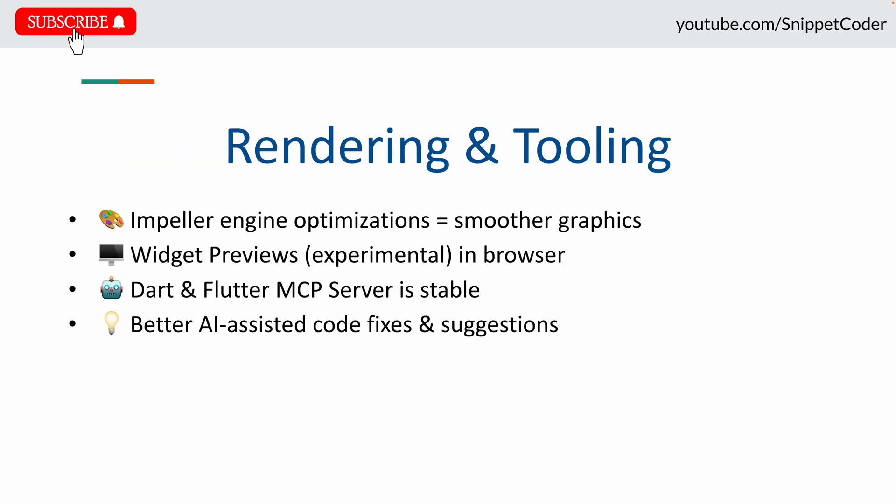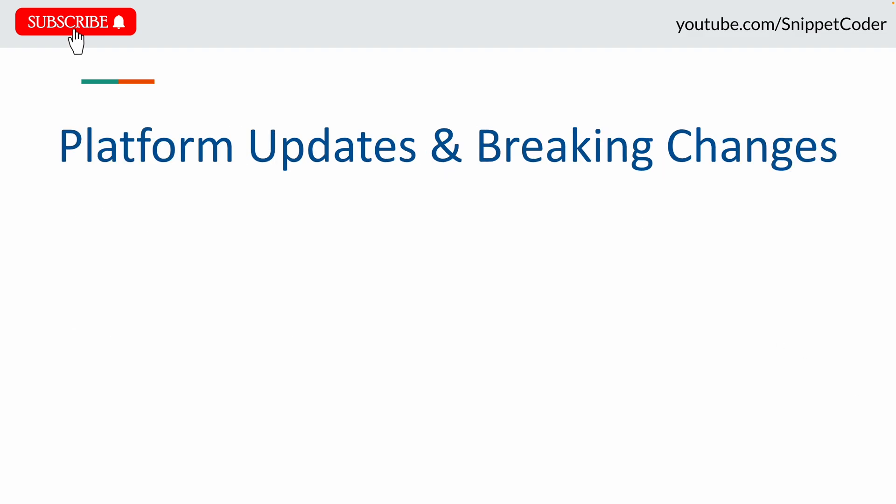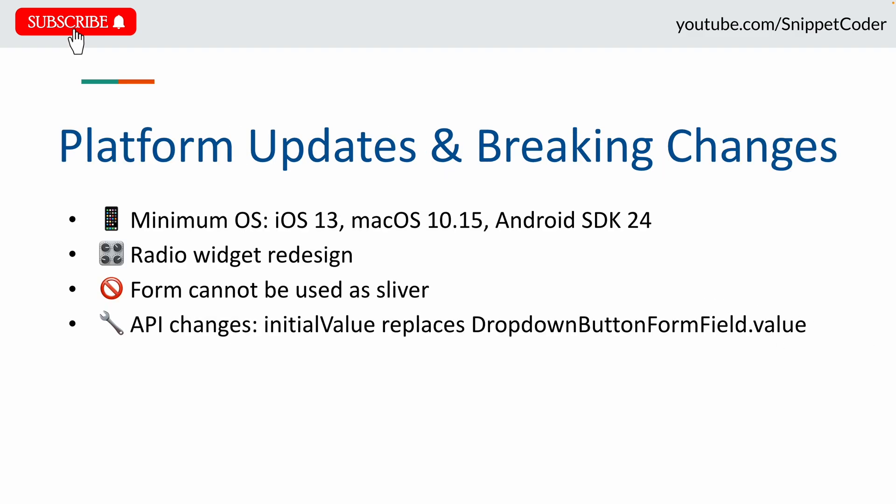For rendering and tooling: rendering gets smoother with Impeller engine optimizations, making graphics more consistent across platforms. Widget previews are now available in the browser as an experimental feature, helping you test UI without running the whole application. The Dart and Flutter LSP server is now stable, improving AI-assisted code suggestions and fixes — a big productivity win for teams.